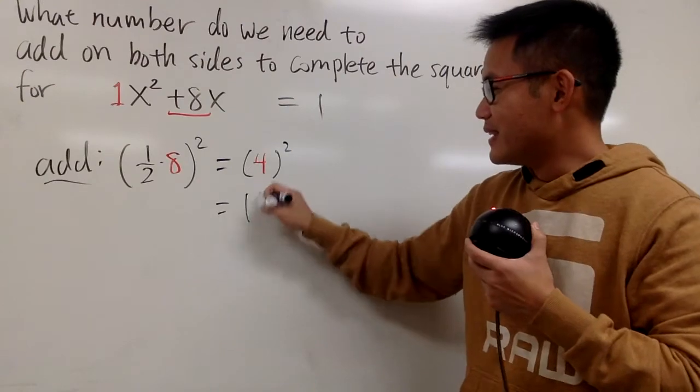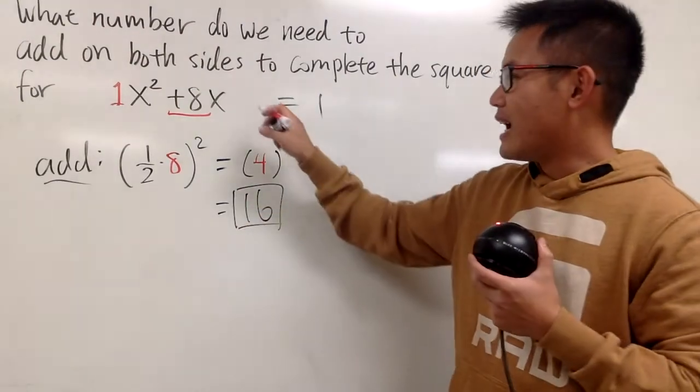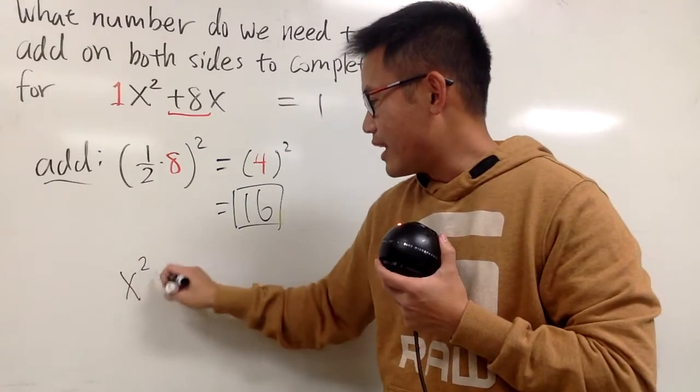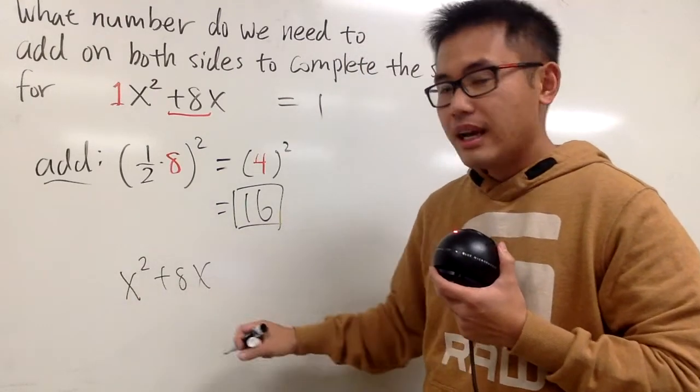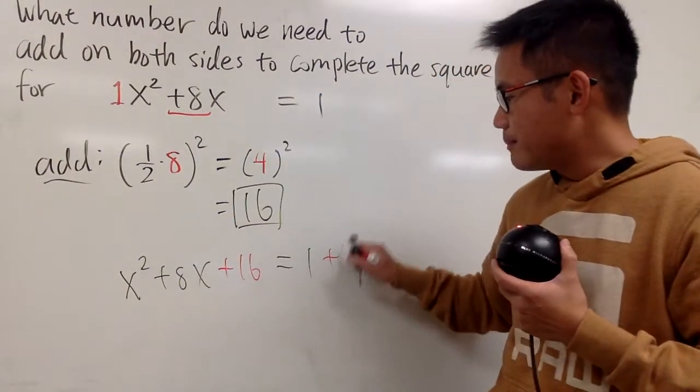Okay, so this is equal to 16. And this is pretty much the answer, because now, if you have x squared plus 8x equals to 1, if you add 16 on both sides.